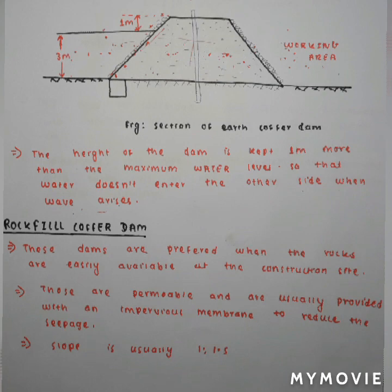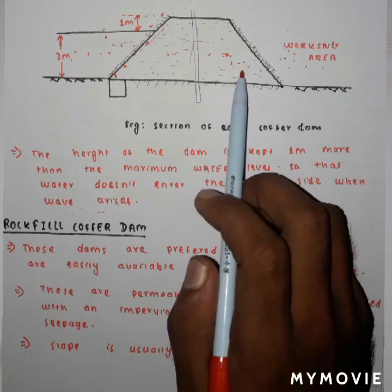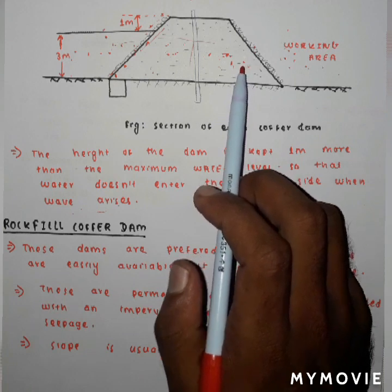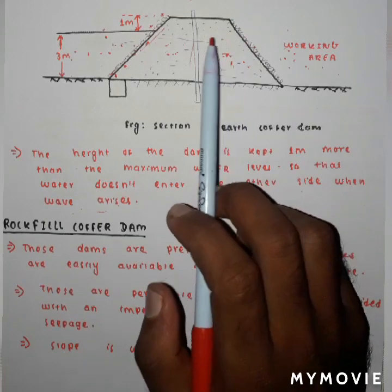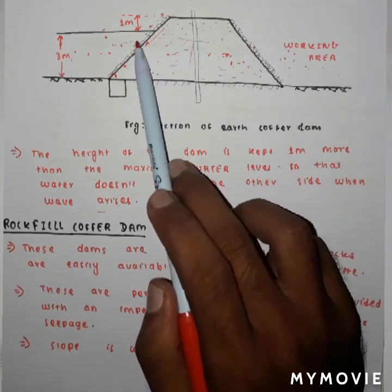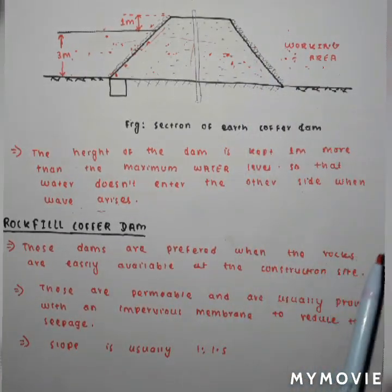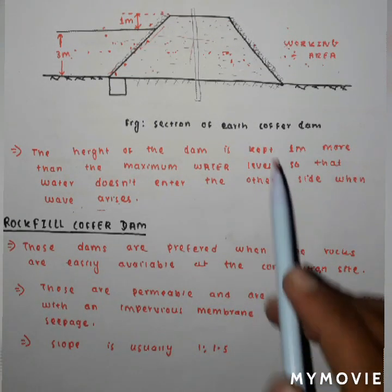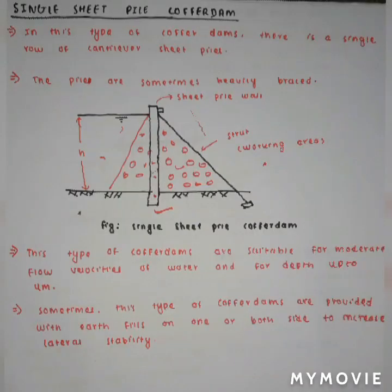Rock fill cofferdam is almost similar to the earth cofferdam, but here the filling material used is rock. Since rock is permeable, this portion is coated with an impermeable membrane to prevent seepage of water into the working area. This type of rock fill cofferdam is generally preferred when rock is easily available at the construction site, and the slope is usually 1:1.5.